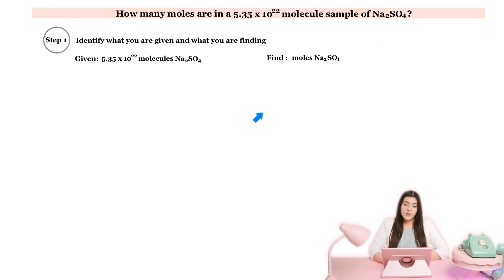So we know that we're going from molecules to moles of the same exact compound. That is extremely important to see. Are we changing the compound or are we keeping it the same? Because that helps us figure out how many steps this question will take.